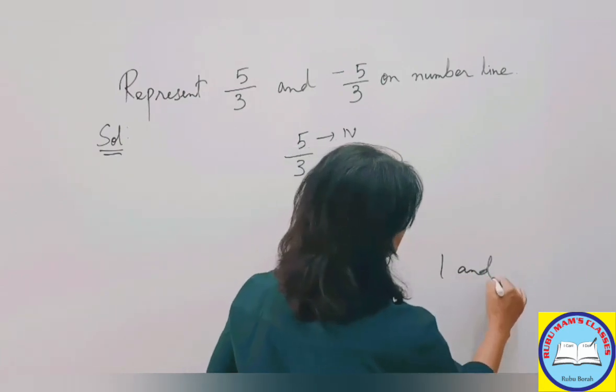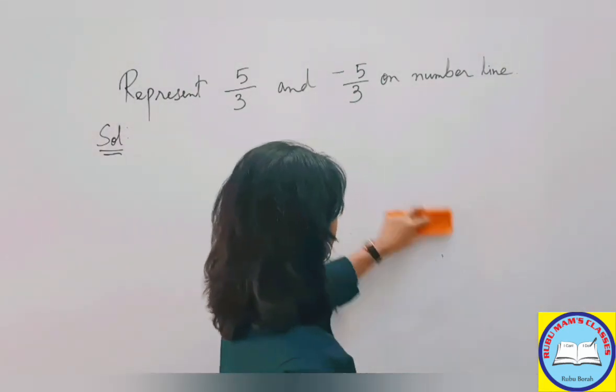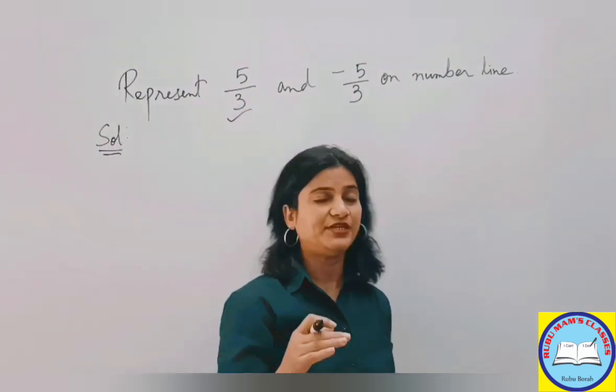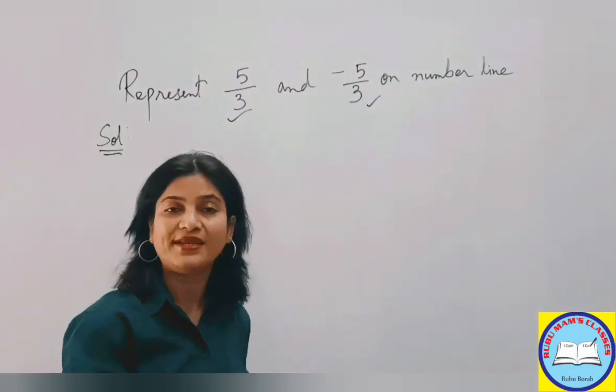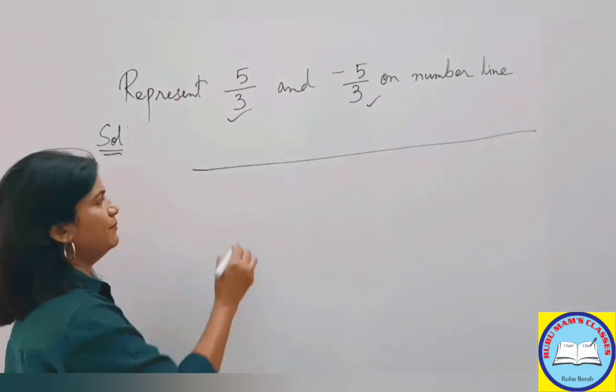This 5 upon 3, this rational number would lie between 1 and 2, and this will lie between minus 1 and minus 2. Now let's draw one number line.